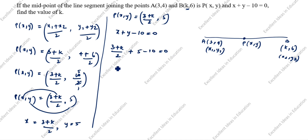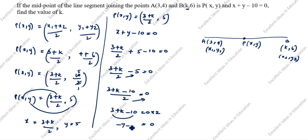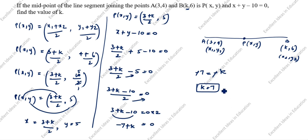Simplifying the numbers: 5 minus 10 gives minus 5. So (3 plus k) divided by 2 minus 5 equals 0. Cross-multiplying: 3 plus k minus 10 equals 0. That gives k minus 7 equals 0, so k equals 7. The value of k we needed to find is 7.